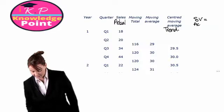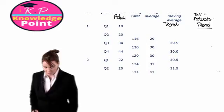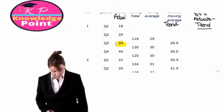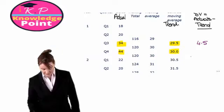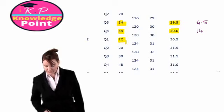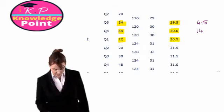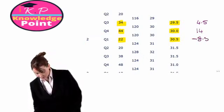Looking at our first quarter with a centred moving average, which is Q3 of year one, our seasonal variation will be our actual figure of 34 minus our trend of 29.5, giving a seasonal variation of 4.5. For Q4 year one, seasonal variation is 44 minus 30, which gives us 14. In Q1 of year two, our seasonal variation is 22 minus our trend of 30.5, giving us minus 8.5.